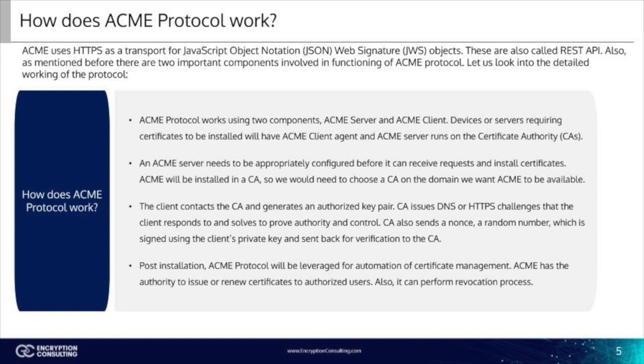An ACME Server needs to be appropriately configured before it can receive requests and install certificates. Steps to set up ACME servers: first, setting up a CA — ACME will be installed in a CA, so we would need to choose a CA on the domain where we want ACME to be available. Then you enter the domain where ACME will be installed and choose on which CA it will be installed. Then you have authorization: the client contacts the CA and generates an authorized key pair. The CA issues DNS or HTTPS challenges that the client responds to and solves to prove authority and control. The CA also sends a nonce — a random number — which is signed using the client's private key and sent back for verification to the CA. This concludes the setting up of ACME.